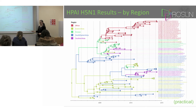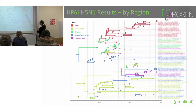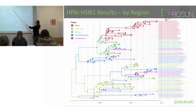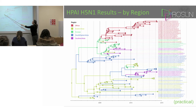This is that same H5N1 data I showed you before, but now at each tip I've marked from which region of the world it came from. In this case I have five regions: Africa, Eastern Asia, Europe, Southeast Asia, and Southern Asia, each in a different colour. And I've used BEAST to infer which region the internal nodes of the tree were in, and it's been coloured accordingly. That's the tree output.